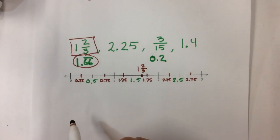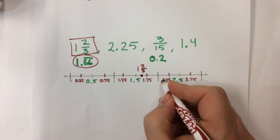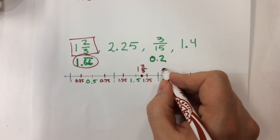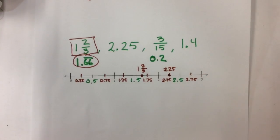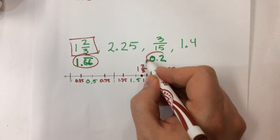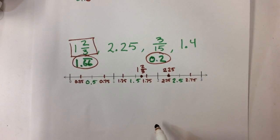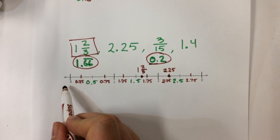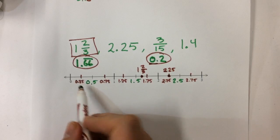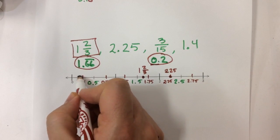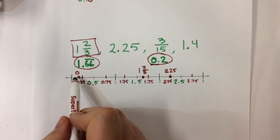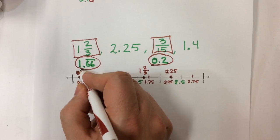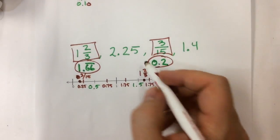The next number is 2 and 25 hundredths. I already labeled the quarter marks, so I know that 2 and 25 hundredths is right there — that's already done. Next is 2 tenths. Since this starts with 0, it must be down here below 1 but bigger than 0. I see that 0.25 is here, so 0.2 — 2 tenths — must be right here. I need to write the fraction: 3 fifteenths goes on my number line right there.